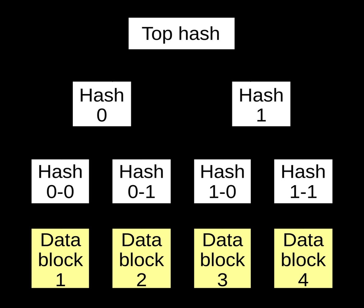Uses: Hash trees can be used to verify any kind of data stored, handled, and transferred in and between computers. Currently, the main use of hash trees is to make sure that data blocks received from other peers in a peer-to-peer network are received undamaged and unaltered, and even to check that the other peers do not lie and send fake blocks. Suggestions have been made to use hash trees in trusted computing systems.